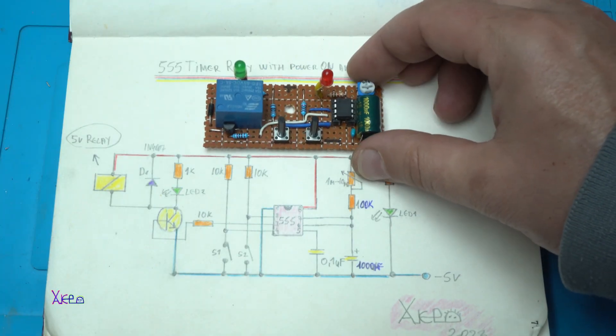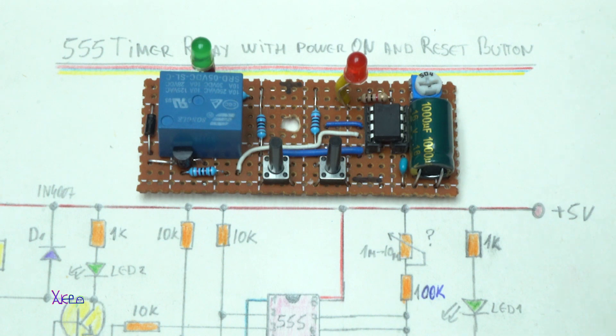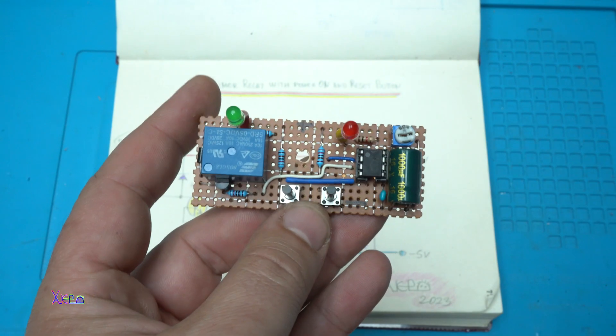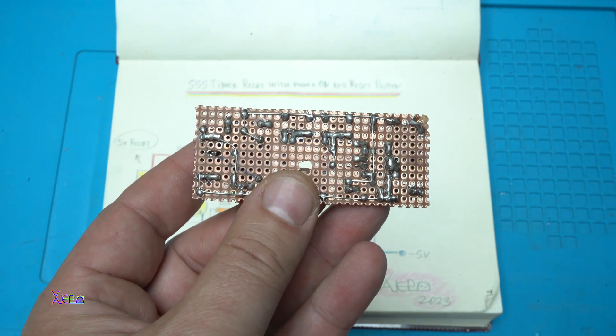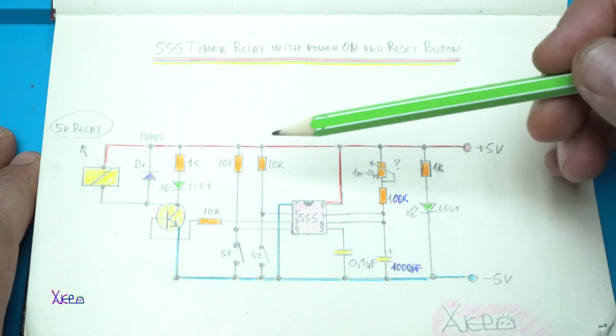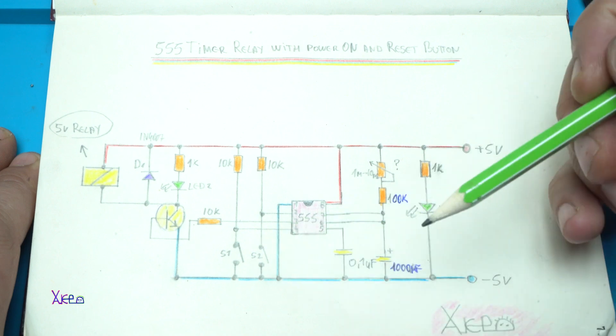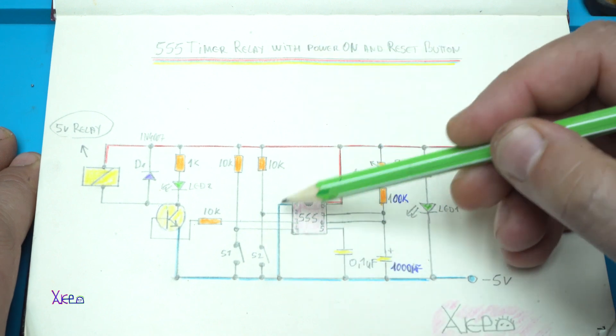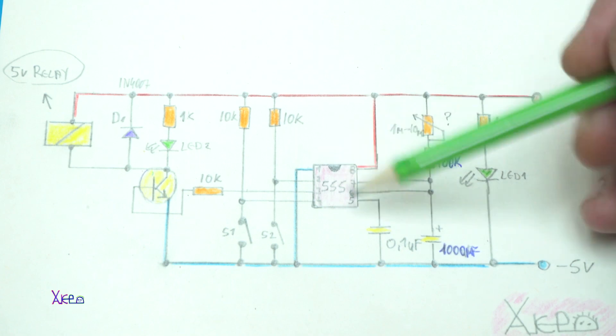In my previous video I showed you the circuit that I built with 555 timer and adding a relay that will be a timer relay that will work on 5 volts, with a power on switch and reset button.